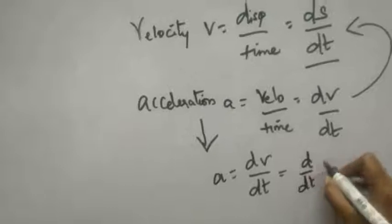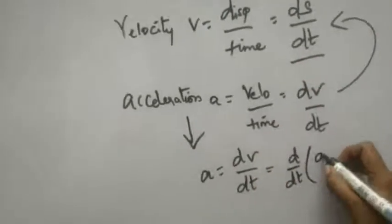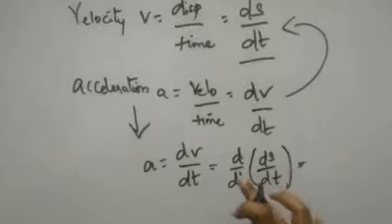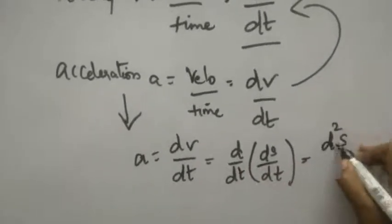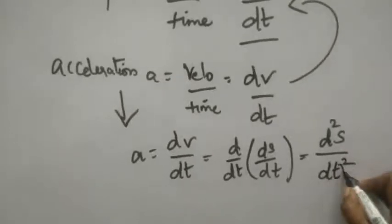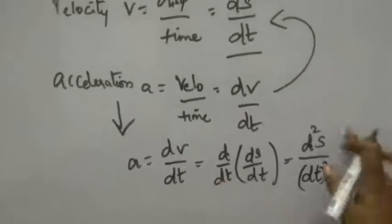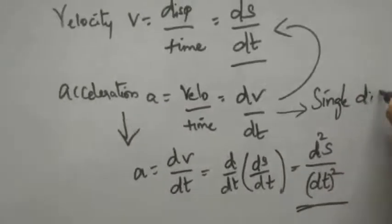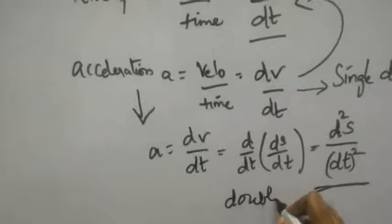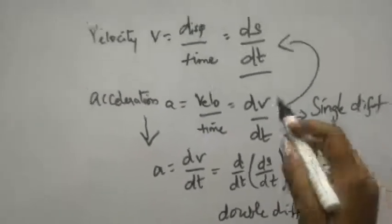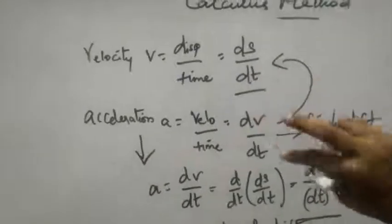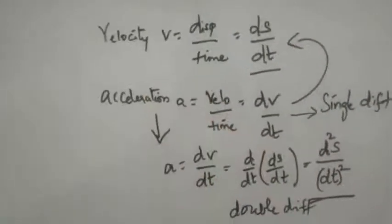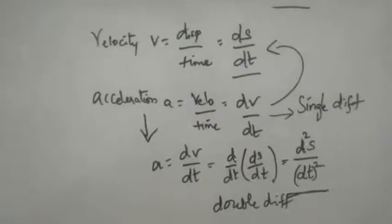So acceleration is dv/dt, and for v you can write it as ds/dt. This means acceleration is d²s/dt² — twice the differentiation, which is called double differentiation. If you differentiate displacement once you get velocity; if you differentiate displacement twice you get the acceleration value. This is the basic understanding needed to proceed with the equations.